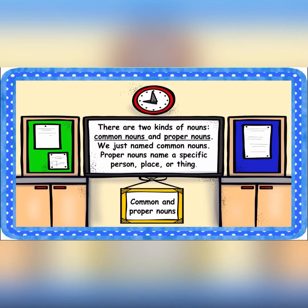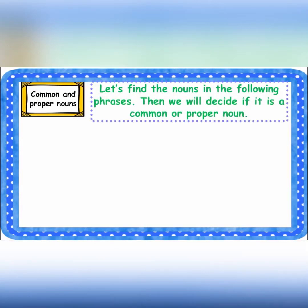Now there are two kinds of nouns. We have common nouns and proper nouns. Proper nouns name a specific person, place, or thing. Common nouns are not specific — for example, 'country' is a common noun, but 'Nigeria' or 'Lagos' is a proper noun because it's specific. Now let's find the nouns in the following phrases and decide if each is a common noun or a proper noun.